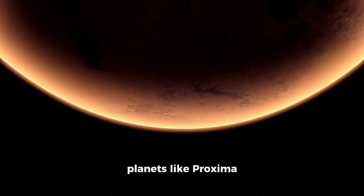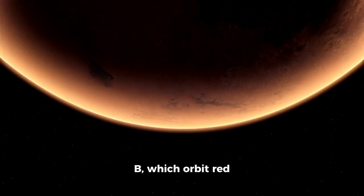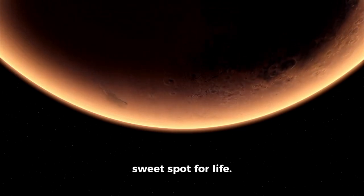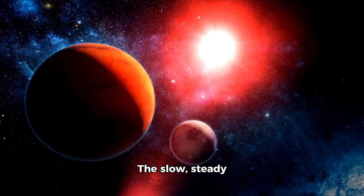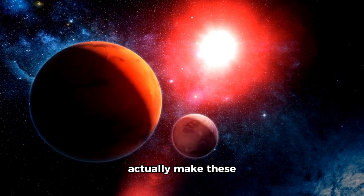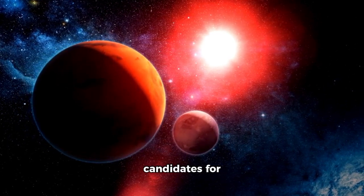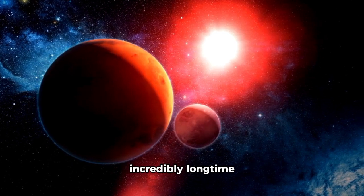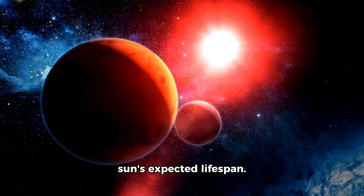This means that planets like Proxima B, which orbit red dwarfs, have a chance to be within this sweet spot for life. The slow, steady energy output of red dwarfs might actually make these planets prime candidates for sustaining life over incredibly long time scales, far beyond the sun's expected lifespan.